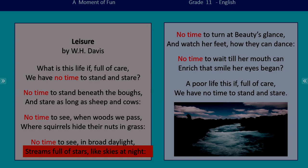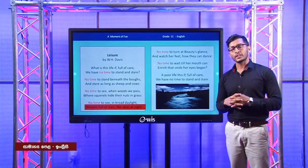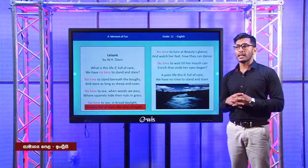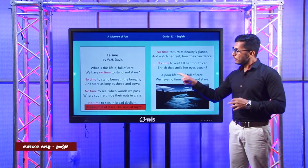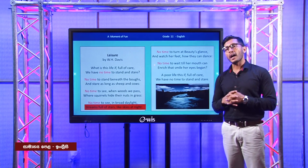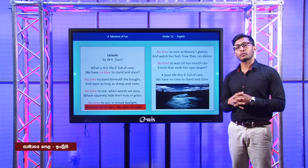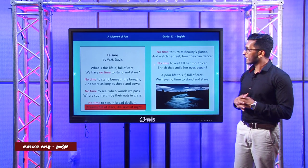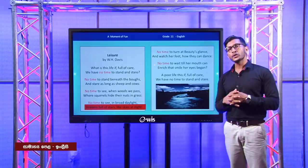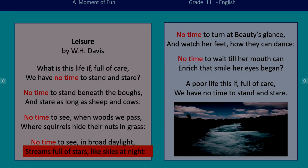Now look at the poem. What do you mean by 'stare'? Stare means looking at something with concentration. So what do you mean by 'boughs'? Boughs are large branches of a tree. And we have the word 'enrich' — enrich means to improve or enhance the quality or value of something. And we have the word 'glance' — glance means to take a brief look.